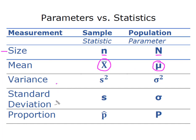When we get to variance and standard deviation for the sample we're going to use s but for the population we're going to use the Greek letter sigma.